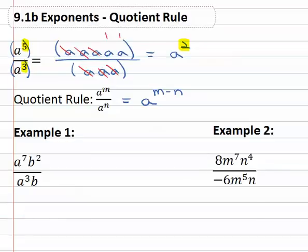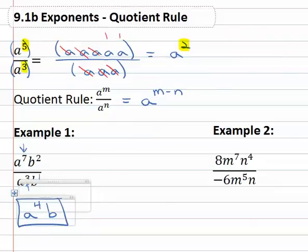So for example, if we're considering a to the seventh b squared over a cubed b, we can simplify this first with the a's by subtracting the exponents. Seven minus three leaves four a's behind. On the b's, the denominator has b to the first. If there's no exponent written, we assume there's a one. Two minus one leaves us with one b, and we don't really need to write the one. So this will simplify to a to the fourth b.